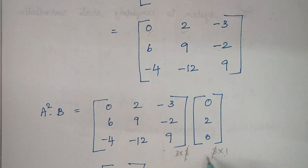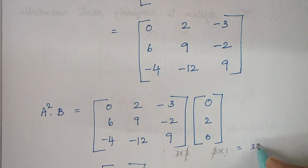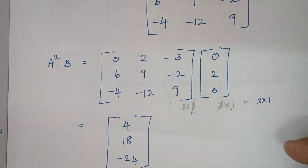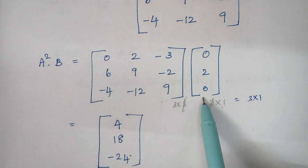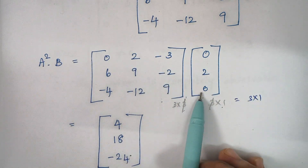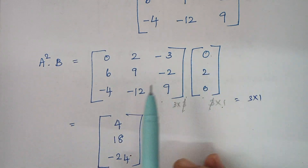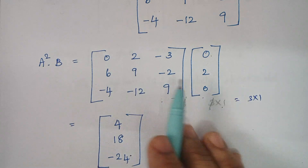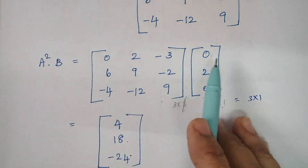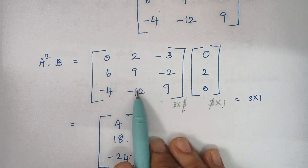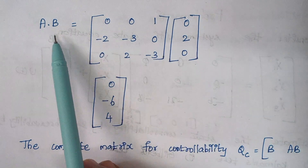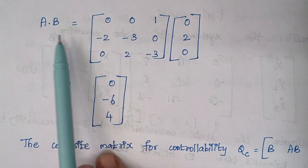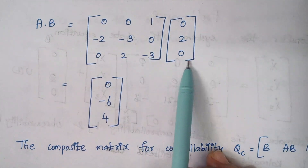The 3×3 and 3×1 dimensions combine to give a matrix of order 3×1, having 3 rows and 1 column. Working through the multiplication: 0×0 + 2×2 + (−3)×0 = 4; then 6×0 + 9×2 + (−2)×0 = 18; and (−4)×0 + (−12)×2 + 9×0 = −24. So this is your A matrix and this is your B matrix — both directly available from the problem, and multiplying them gives this result.